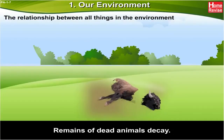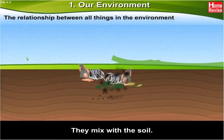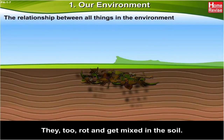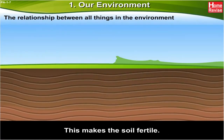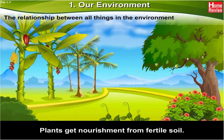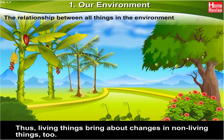Remains of dead animals decay and mix with the soil. Leaves fall off trees; they too rot and get mixed into the soil. This makes the soil fertile. Plants get nourishment from fertile soil. Thus, living things bring about changes in non-living things too.